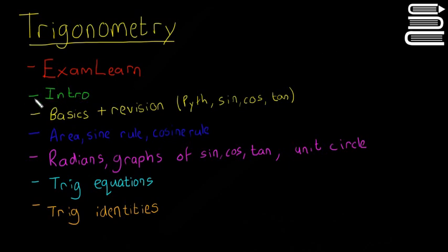In this video we're going to go through a quick intro to trigonometry. Later on we're going to have basics and revisions such as Pythagoras, sine, cos and tan. Then we're going to look at the area of a triangle, the sine rule, the cosine rule. We're going to look at radians, graphs of sine, cos and tan, the unit circle, then trigonometric equations and trigonometric identities.